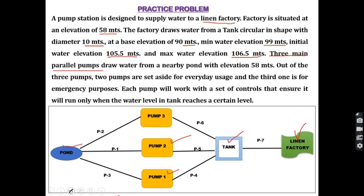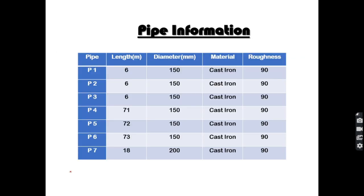For this situation we have a pond, three pumps, one tank, and one factory. The factory is the final destination for water supply and will act as a junction — because in WaterGEMS, a junction is the point where water is demanded and it has a particular demand value. The tank, pumps, and pipes connect all these elements, and the pond serves as the reservoir.